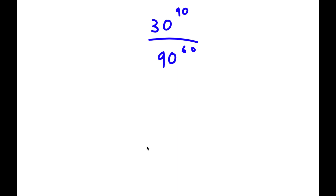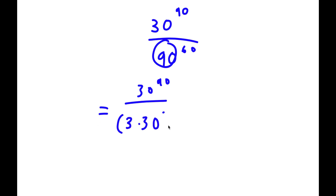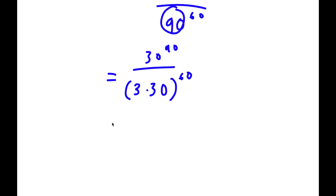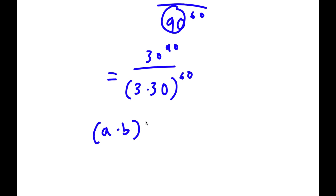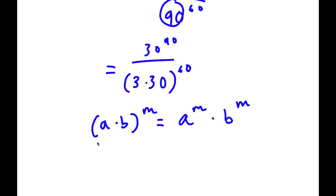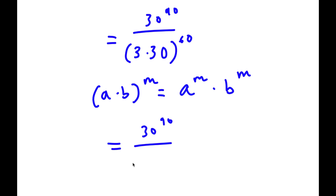In this problem, I have 30 to the power of 90 over 90 to the power of 60. To solve this, I'm going to first rewrite 90 as 3 times 30. So now I have 30 to the power of 90 over 3 times 30 to the power of 60. Using the rule that a times b to the power of m equals a to the power of m times b to the power of m, I have 3 times 30 to the power of 60 equal to 3 to the power of 60 times 30 to the power of 60.